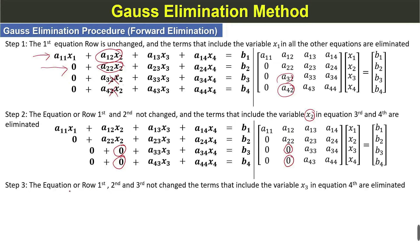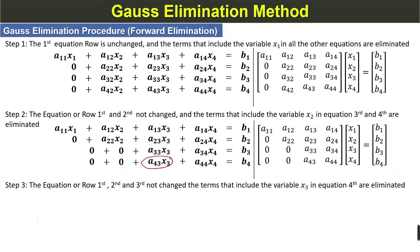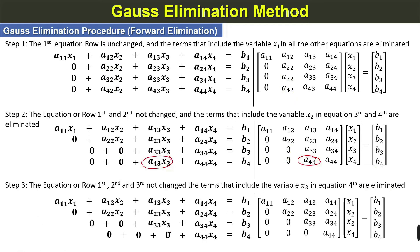In the third step, the first, second, and third equations or rows are not changed, and the terms that include variable x3 in the 4th equation or 4th row are eliminated. We eliminate this term, that is A43. So this gives us the upper triangular form.